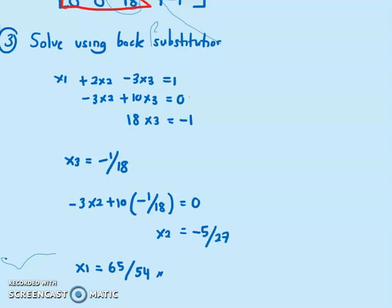And lastly, substituting my x2 and x3 inside the first equation, I can obtain x1 equals 65 over 54. So this is what we call Gauss elimination approach. This is the first part, solving a system of linear equations using direct method. On my next video, I'll show you how to solve using LU factorization with maximum column pivoting. That's all for today.